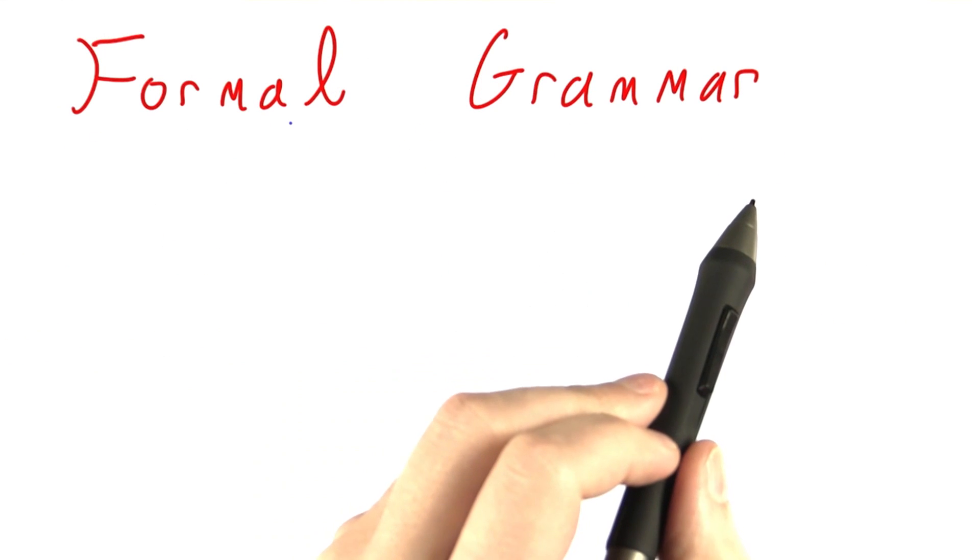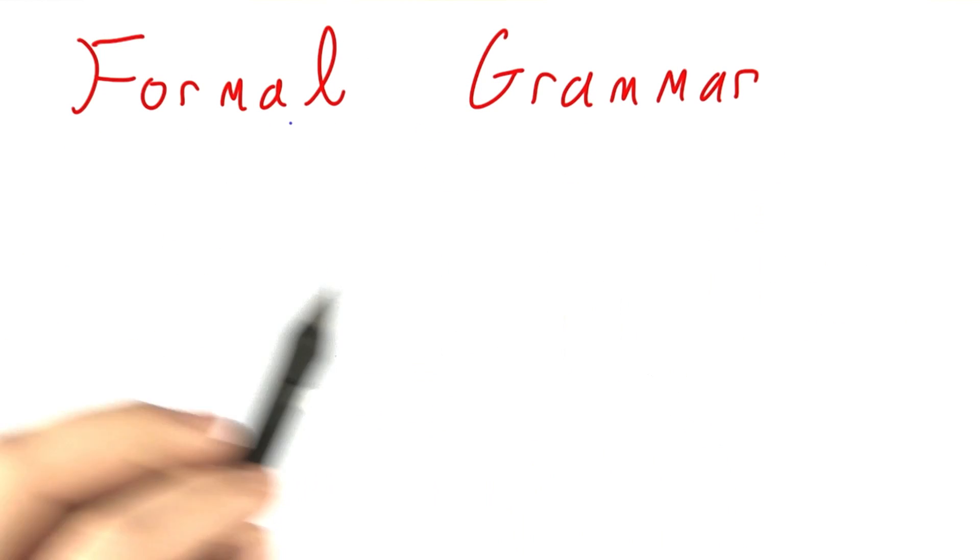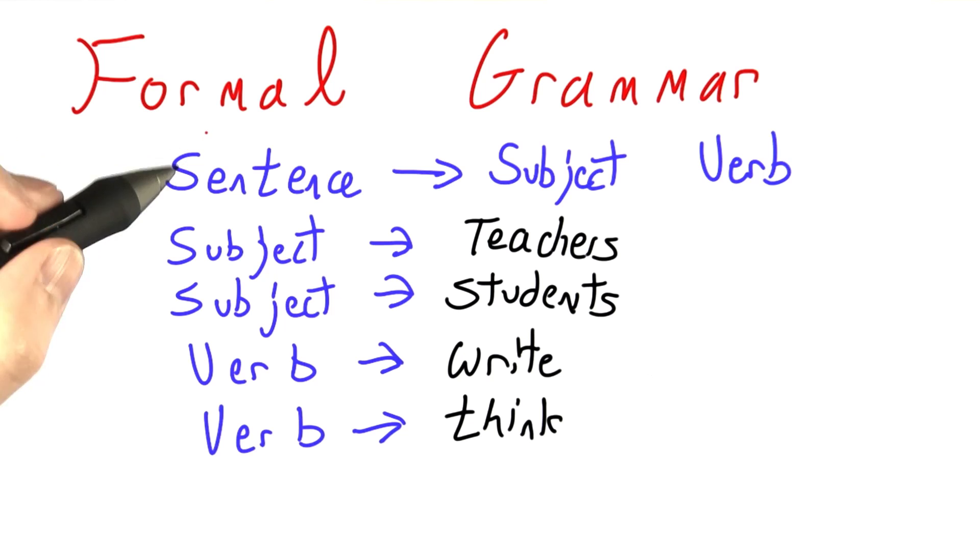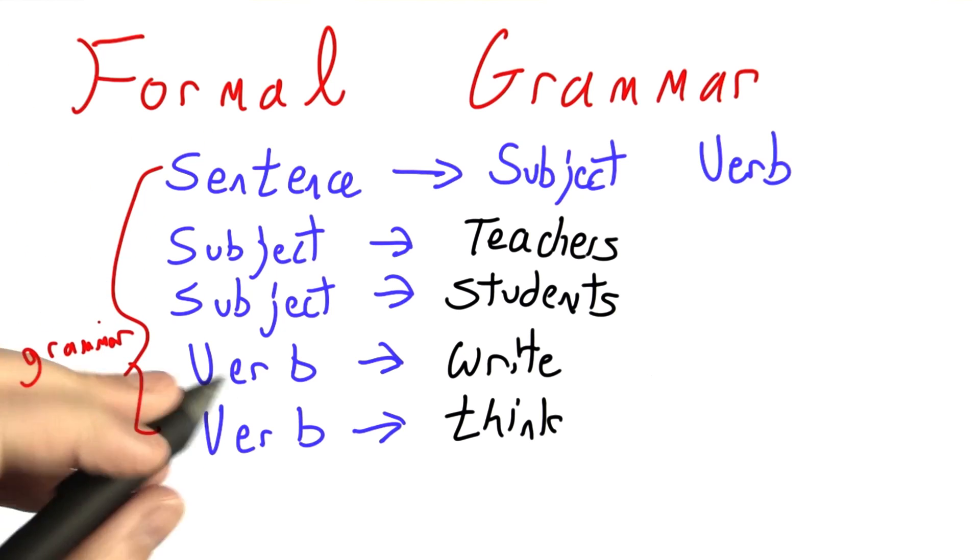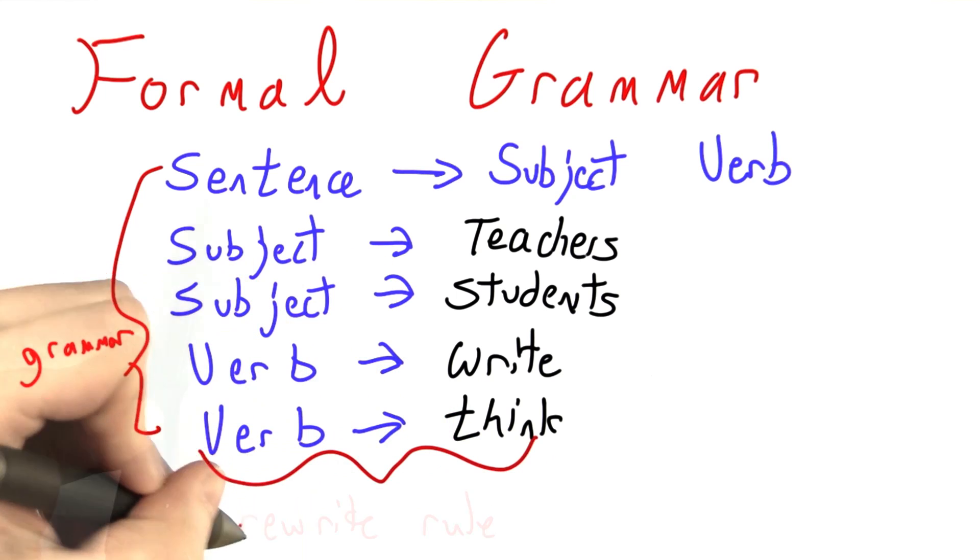We can write down these formal grammars using a special notation. Here, these five lines together are my formal grammar, and each one is what is known as a rewrite rule.